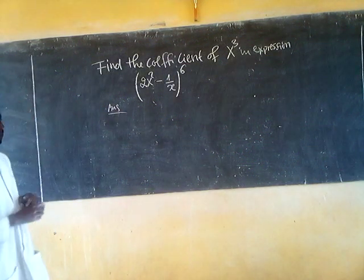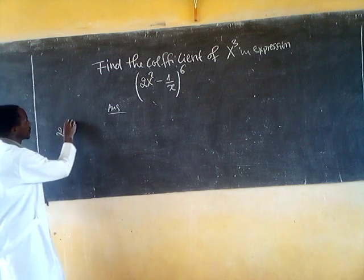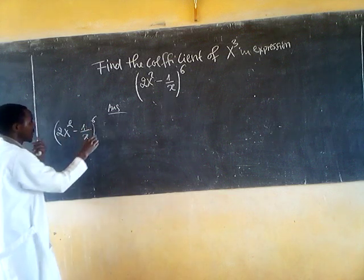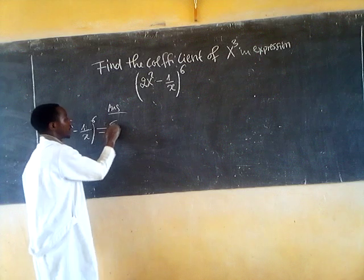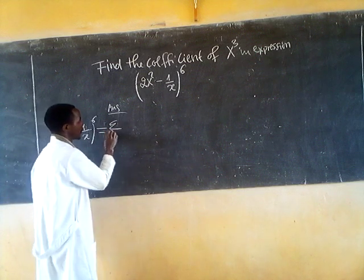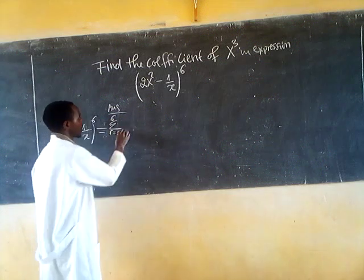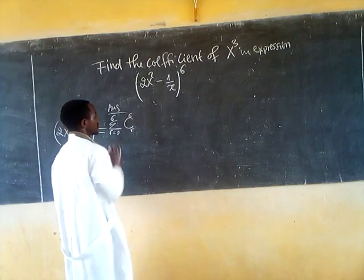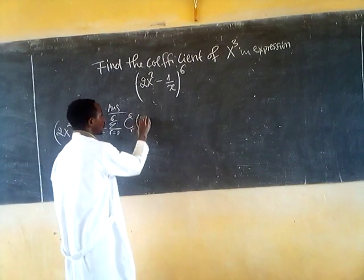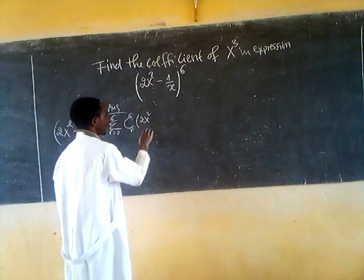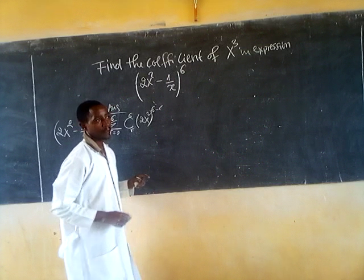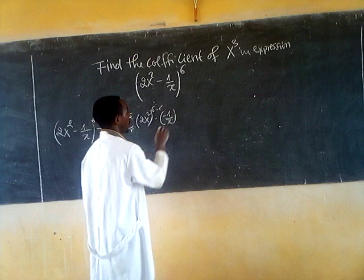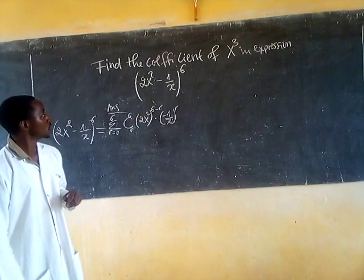We expand the expression (2x² - 1/x)^6 using the binomial summation from r equals 0 up to 6: combination of 6 choose r, times (2x²)^(6 minus r), times (-1/x)^r. So we need the coefficient.